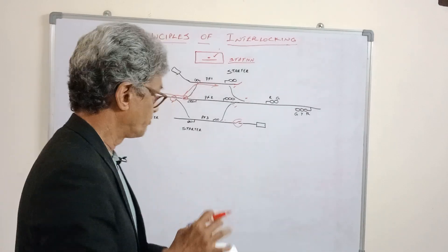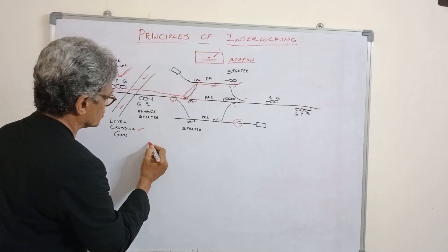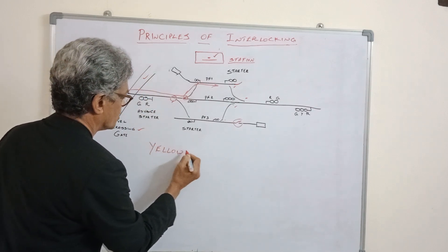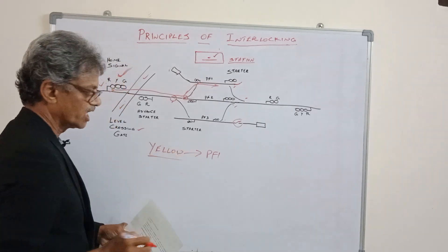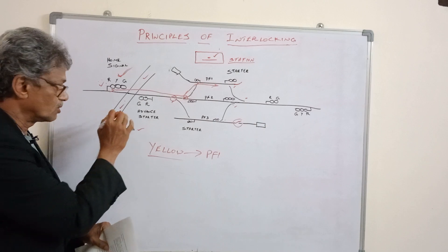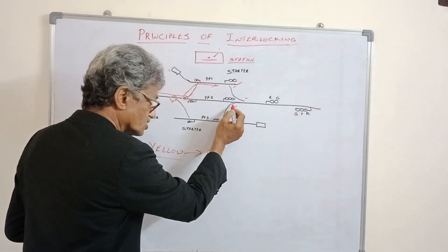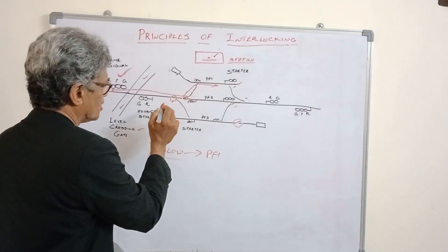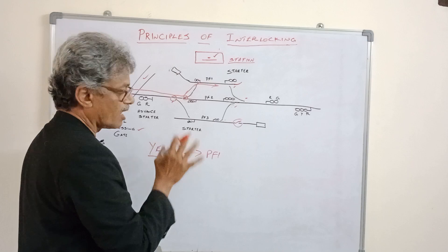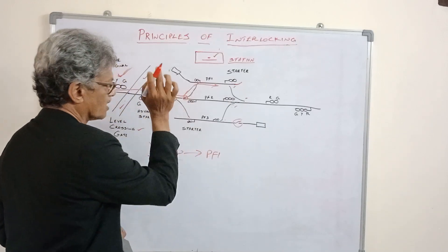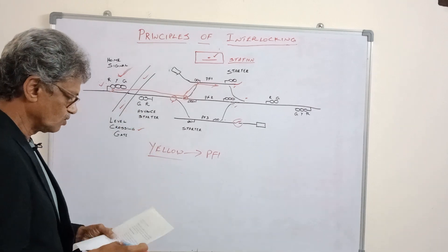After the signal has been taken off, we call this a route — for example, to platform number one or to a loop line. For that route, this level crossing gate closes against road traffic. This point is set in normal condition, this point is set in reverse condition, and these other points are also set in normal condition. In a particular position, these points should be set and locked with a lock before the signal is cleared.